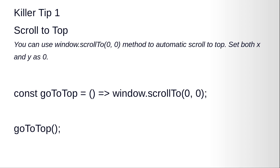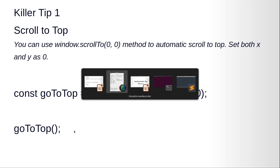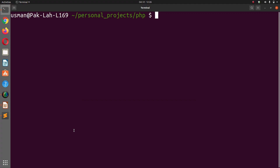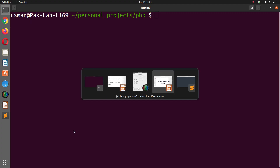Scroll to top. You can use the window.scroll(0, 0) method to automatically scroll to the top — set both X and Y as zero. So you can say: const goToTop equals a function, and equals window.scroll(0, 0). At the end you can call goToTop.